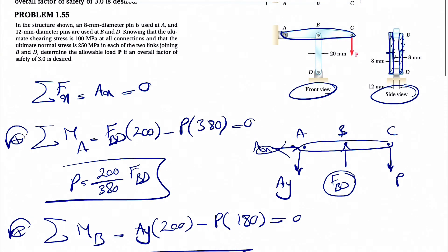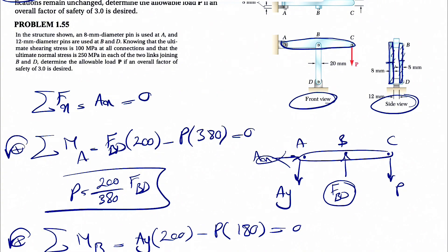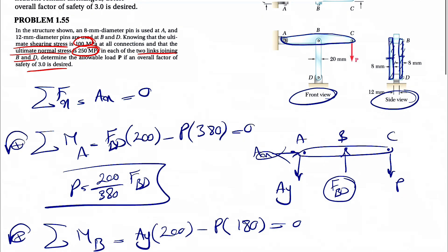We are dealing with three different checks. The question gives us the ultimate shearing stress at all connections as 100 MPa and the ultimate normal stress of 250 MPa in the two links joining B and D, with a factor of safety of three. We need to watch for shear at pin A, shear at pins B and D, and normal stress in member BD. The lowest P we get will be our final answer.